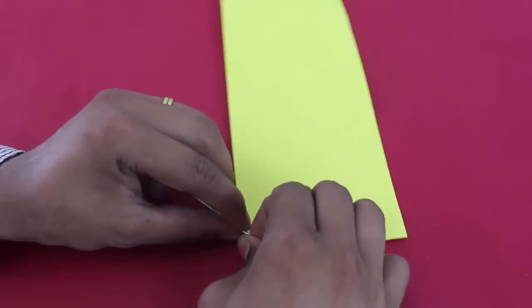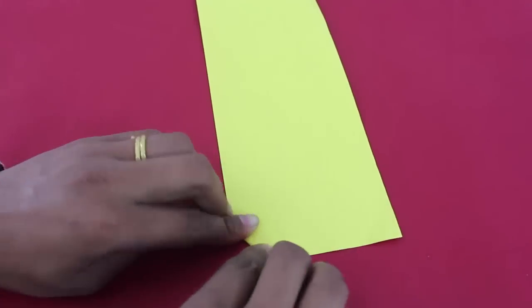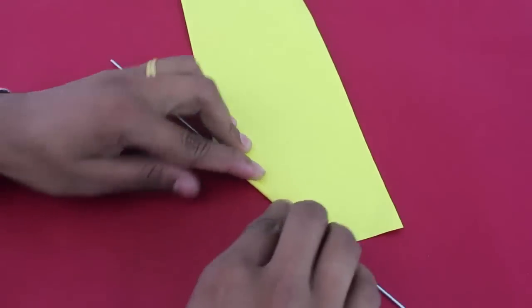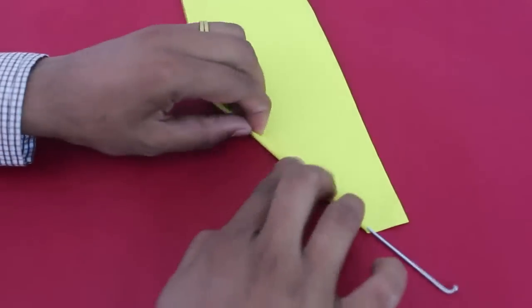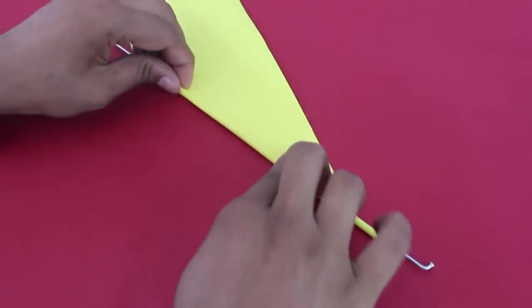Now curl the paper diagonally on the cycle spoke. Fold tightly to make a paper tube. Keep rolling.